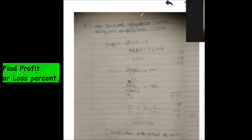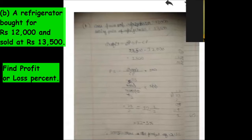Now B part, read. A refrigerator bought for rupees 12,000 and sold at 13,500.